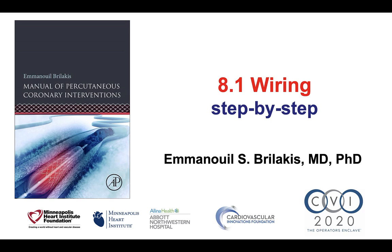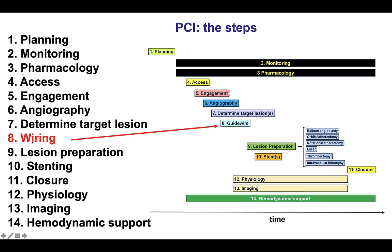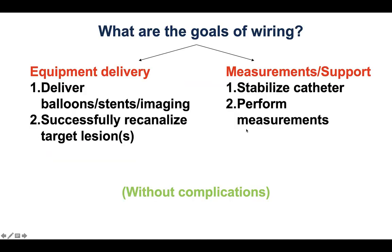Hi, this is Manos Brilakis from the Minneapolis Heart Institute and the Cardiovascular Innovations Foundation, presenting video 8.1 for the Manual of Percutaneous Coronary Interventions. This video discusses the steps involved in advancing a guide wire across the target coronary lesion. Wiring is the 8th of the 14 steps of percutaneous coronary intervention and it is an essential step. If there is no wire advancement, it is not possible to perform lesion preparation or to deliver stents to the target lesion. Therefore, guide wire insertion is a mandatory step for percutaneous coronary intervention.